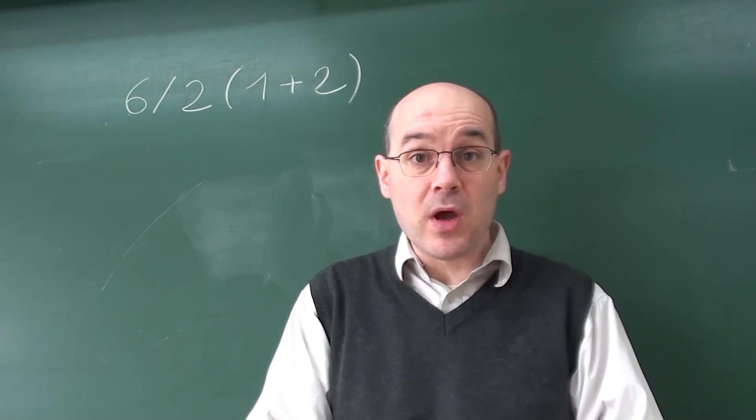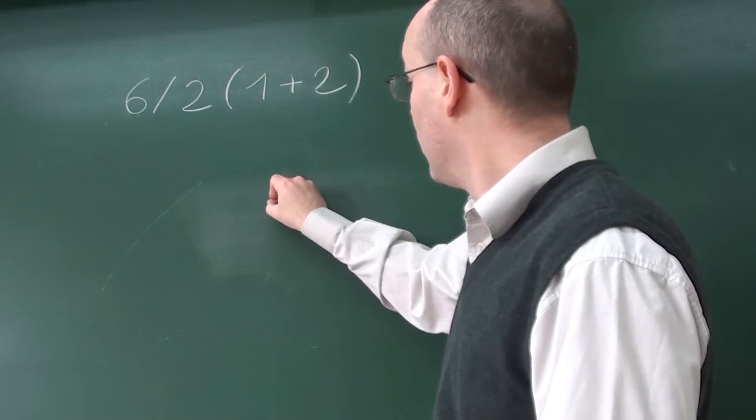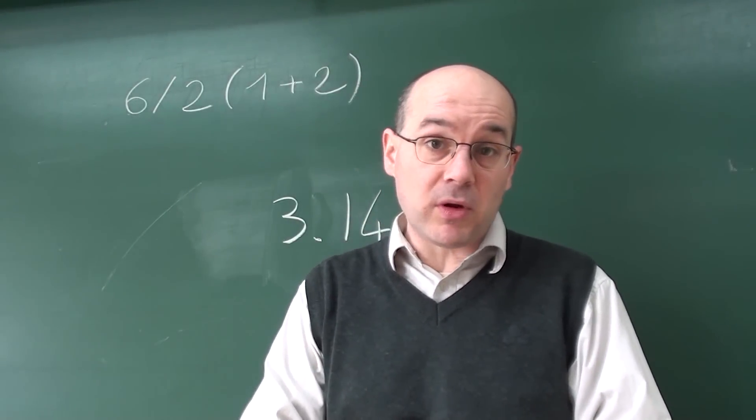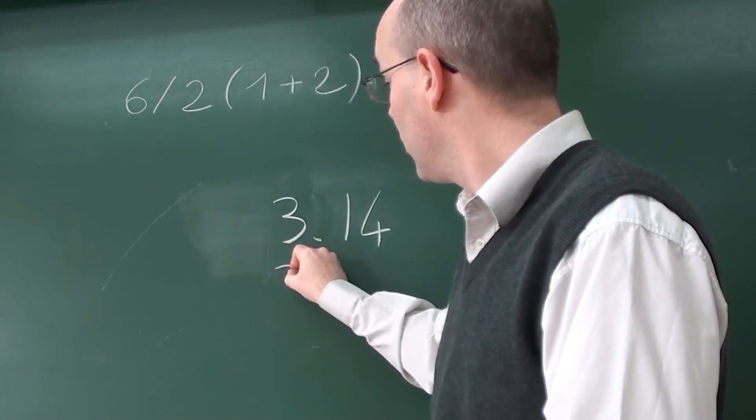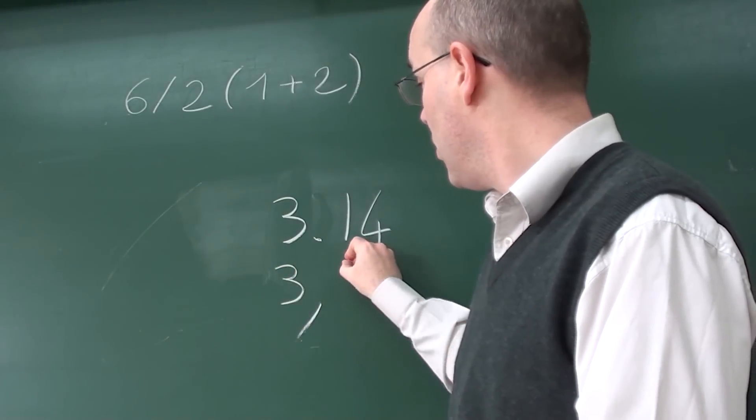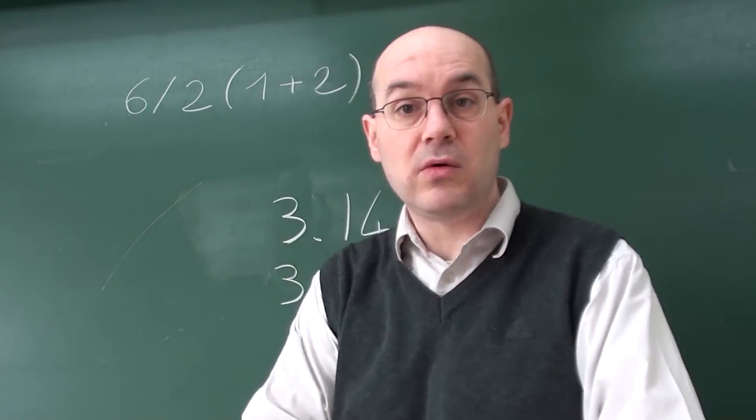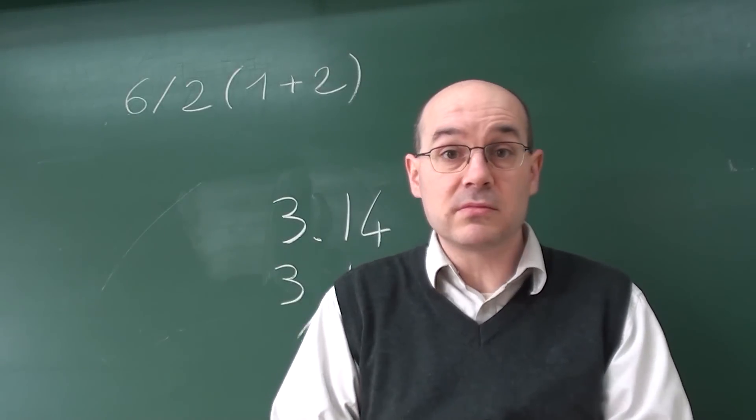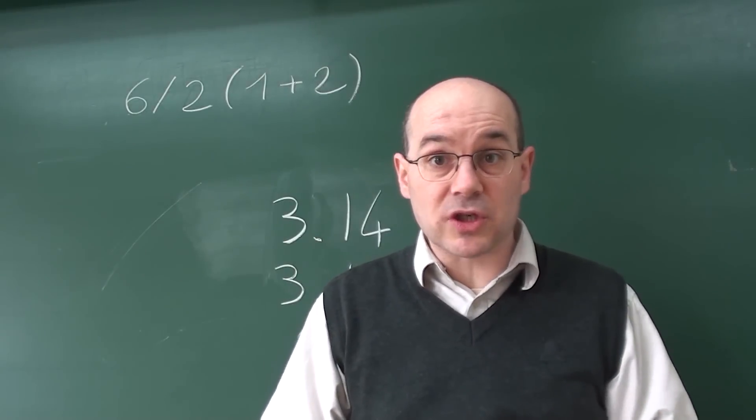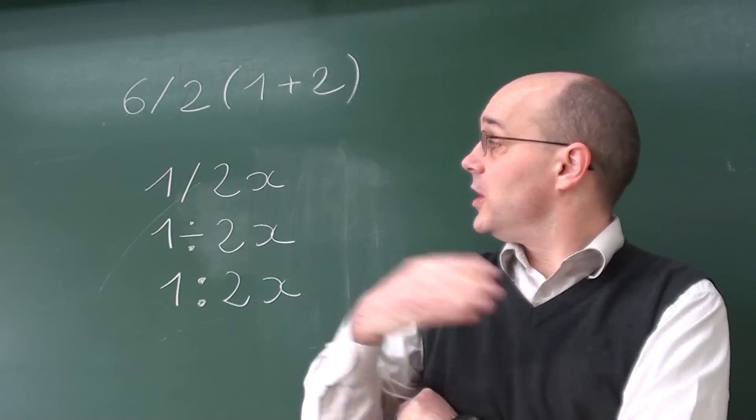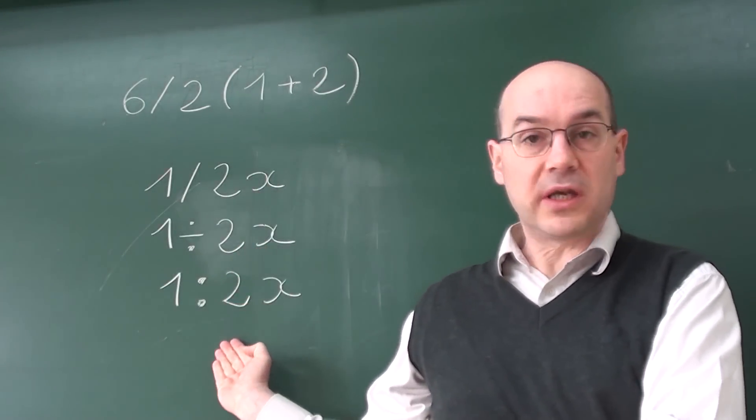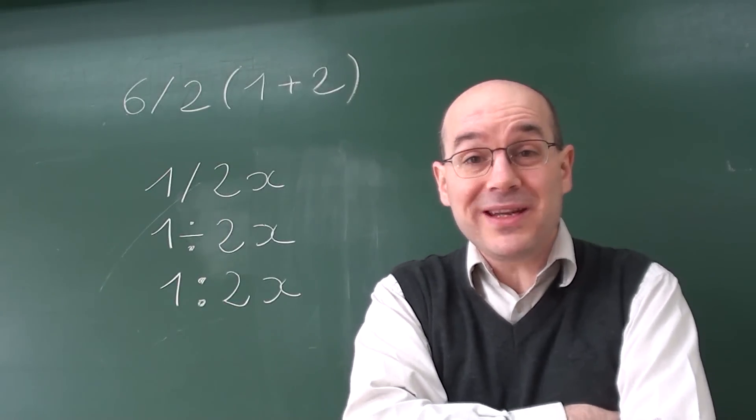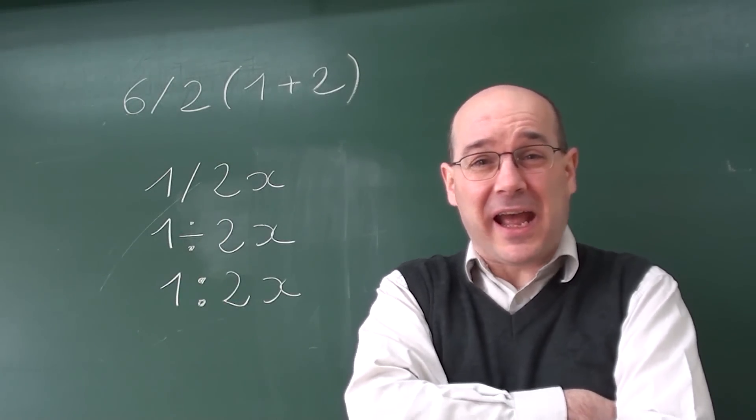For instance, what some people write 3.14, some other people will write it 3,14, which is the case in my country. And this difference in notation is the same for division. So, those three notations for division are actually exactly equivalent.